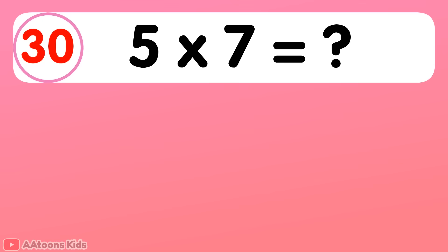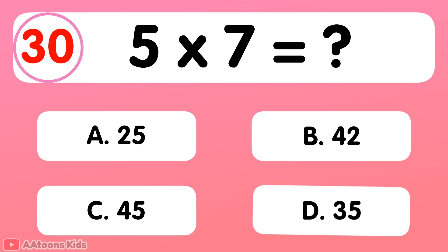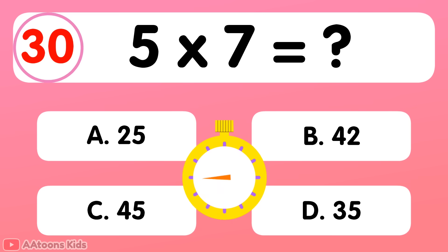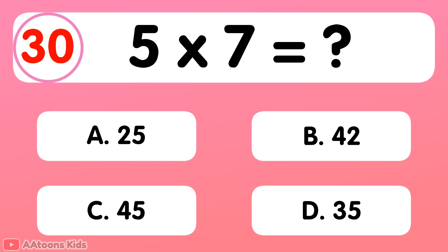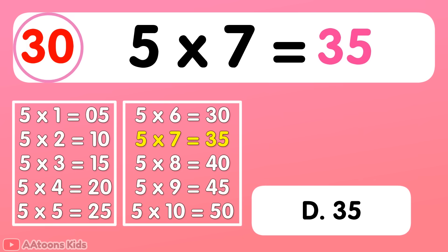5 times 7 is equal to... 35. 5 times 7 is 35.